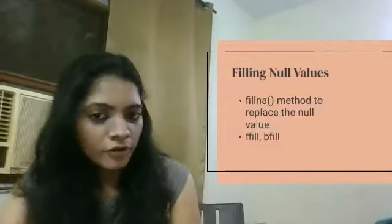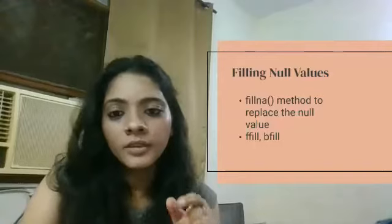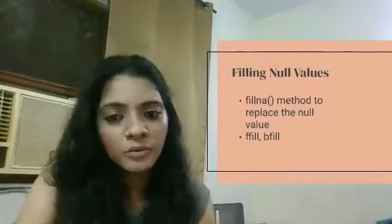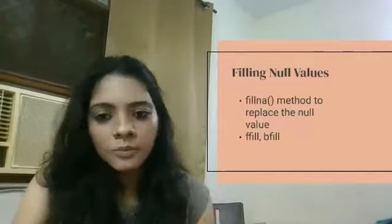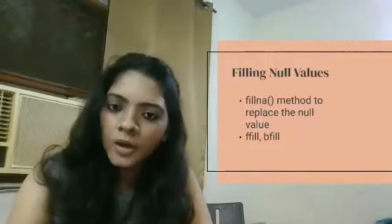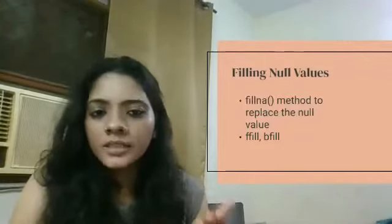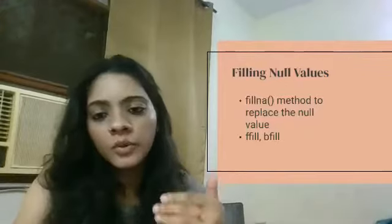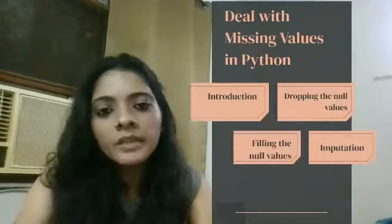Forward and backward fill are not covered in detail here as I have dealt with all of these — filling and dealing with null values — in my course. I'll provide the link; please go ahead and see. It covers filling null values, replacing values, dropping null values, and various other ways to impute those values. Now we are coming to imputation, which is another way of dealing with missing values.